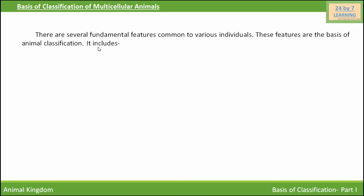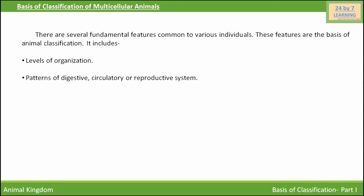The first fundamental feature is level of body organization. Animals may possess cellular level, tissue level, organ level, or organ system level of body organization. The second fundamental feature is the pattern of complexities of various organ systems.